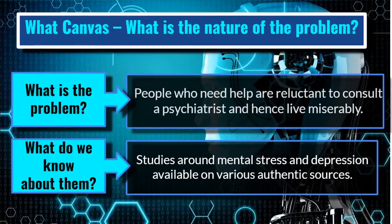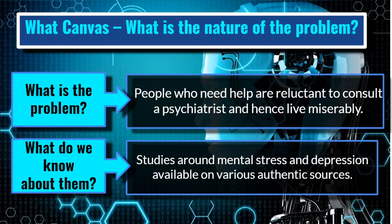The next canvas is 'What'. What is the nature of the problem? We need to find the answers to two questions: what is the problem, and what do we know about it? The problem is that people who need help are reluctant to consult a psychiatrist and hence live miserably. The problem is not that people are experiencing stress, but that they need help but are reluctant to consult a psychiatrist. Studies around mental stress and depression are available on various authentic sources which we can use for information.